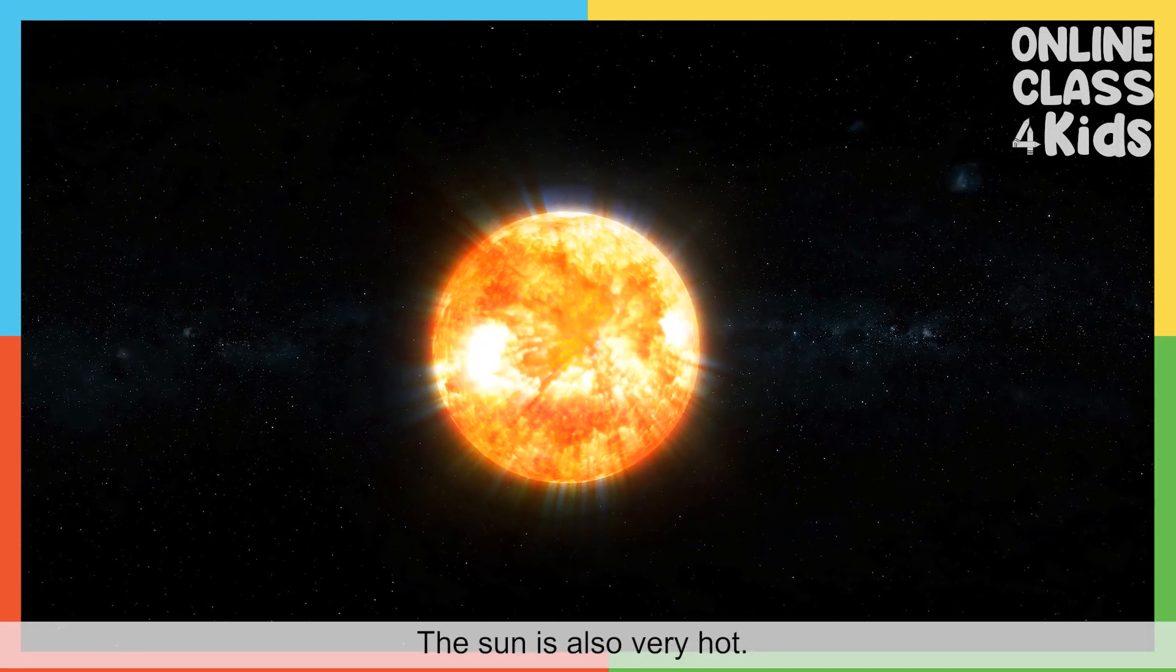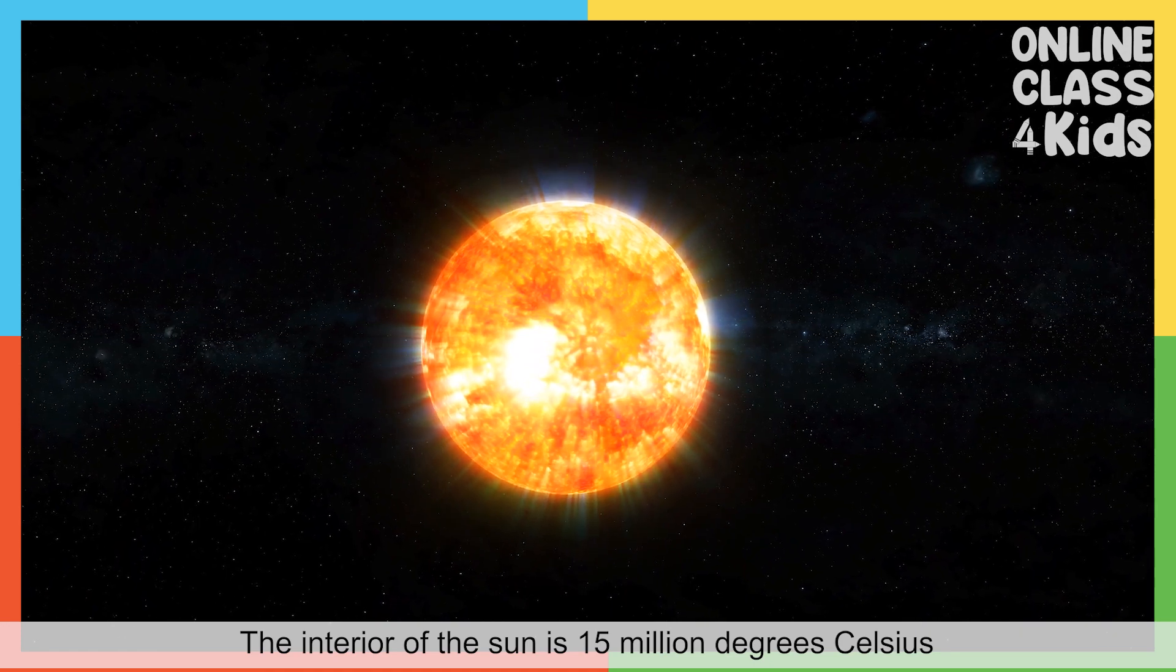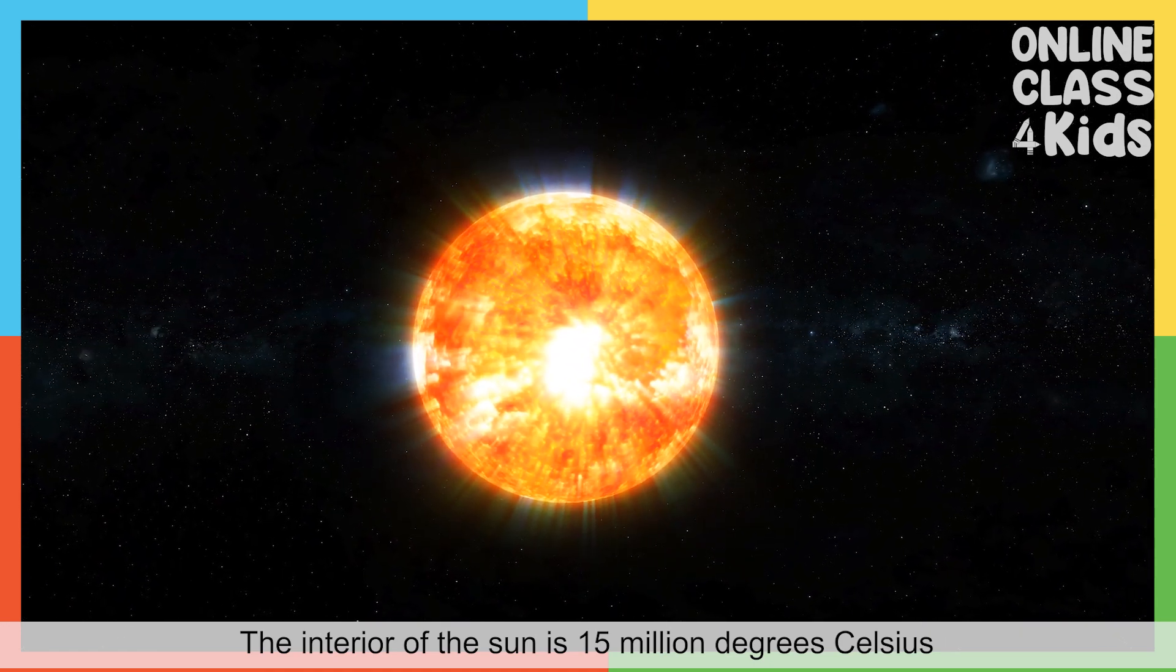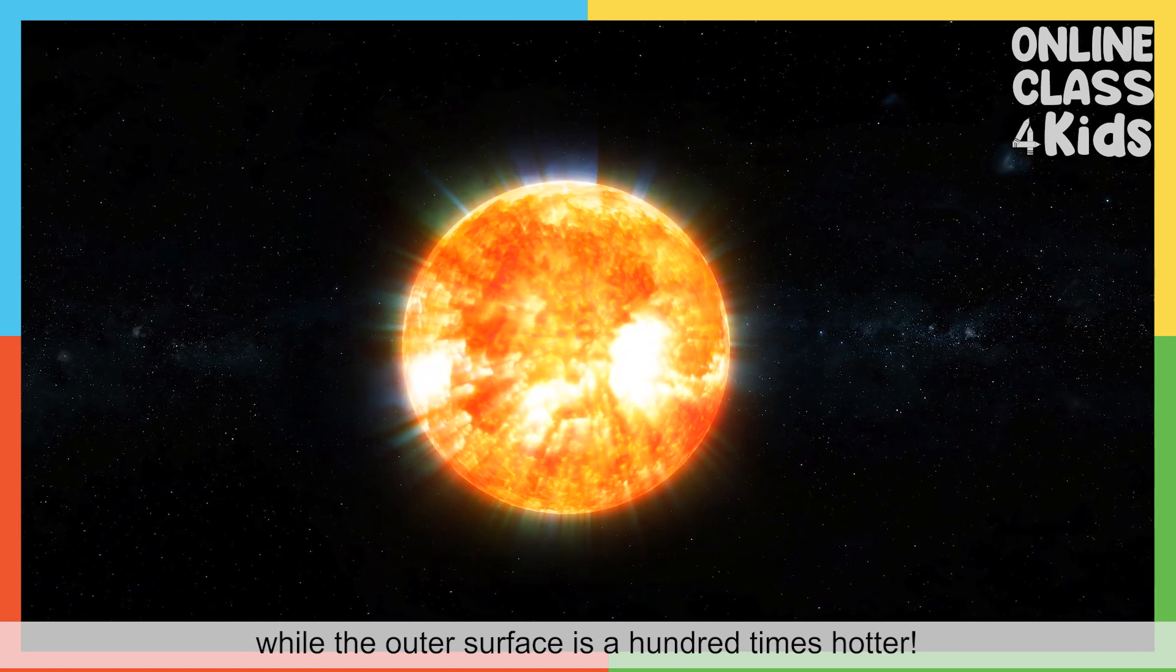The Sun is also very hot. The interior of the Sun is 15 million degrees Celsius, while the outer surface is 100 times hotter.